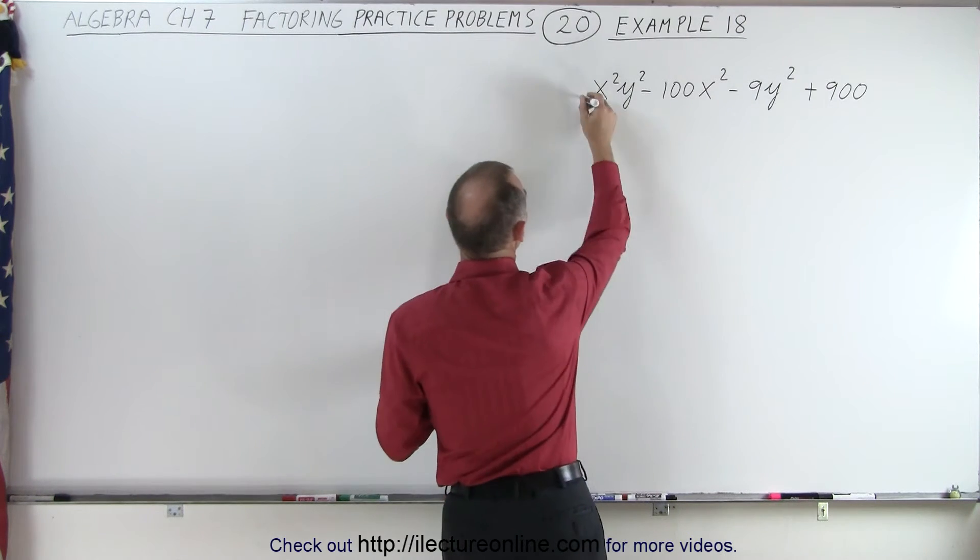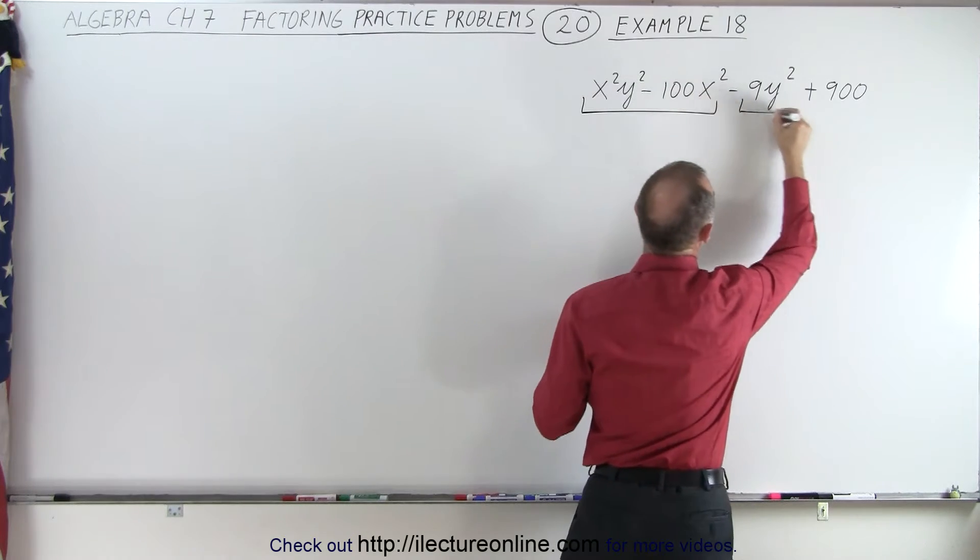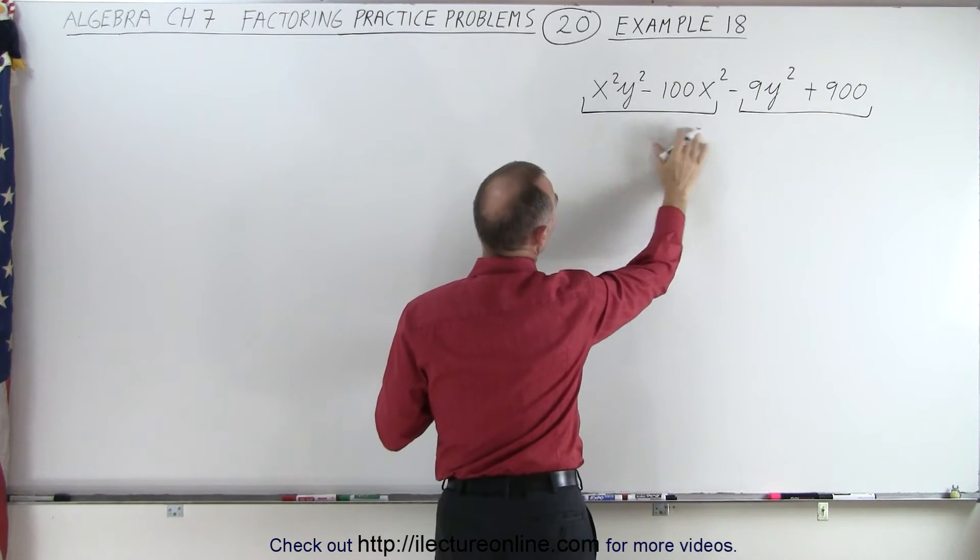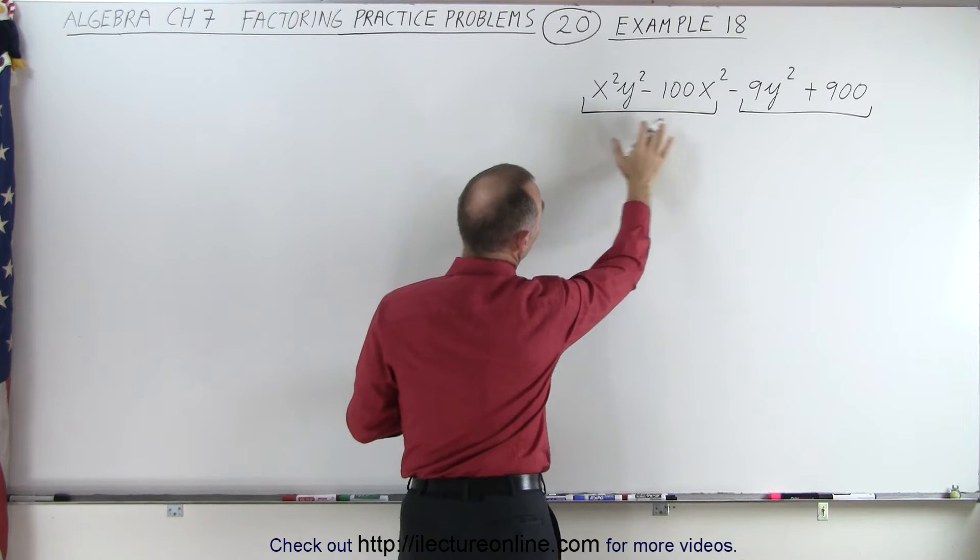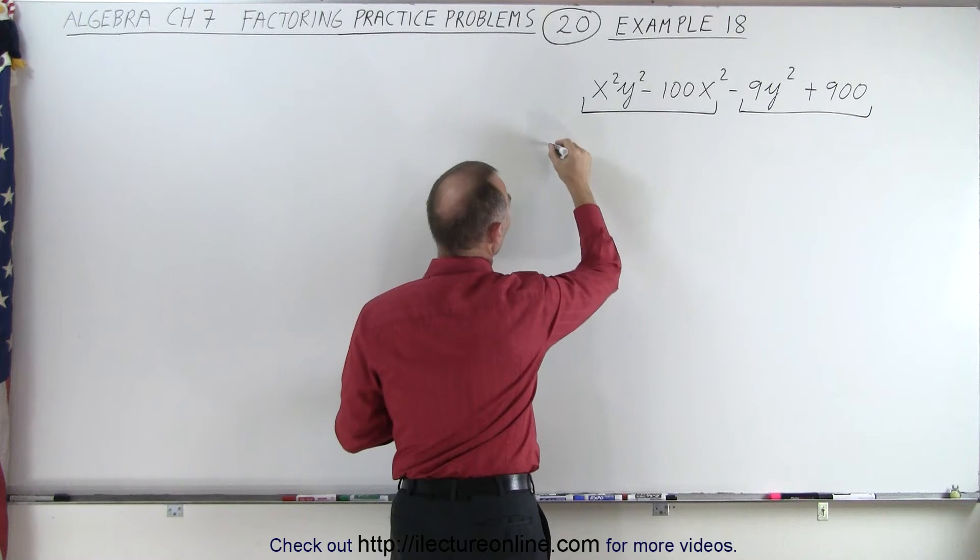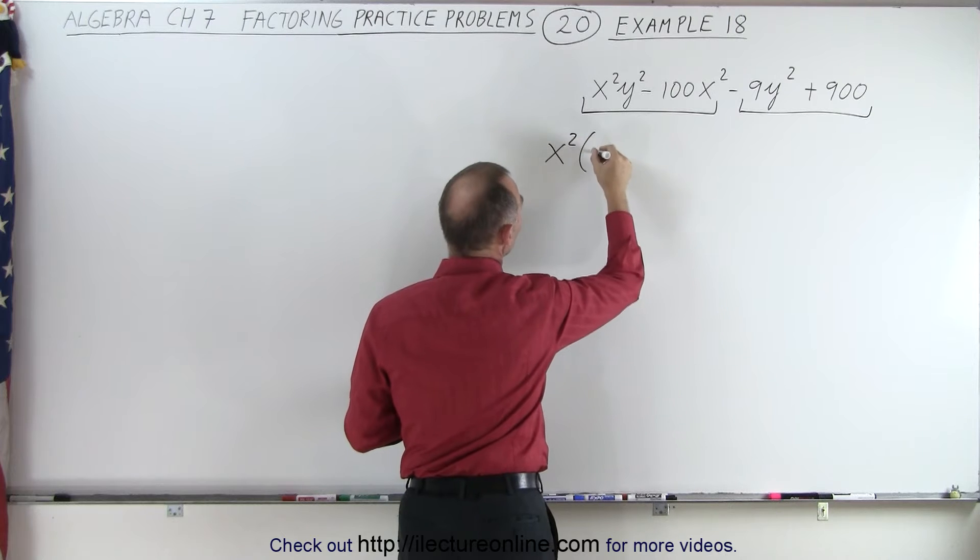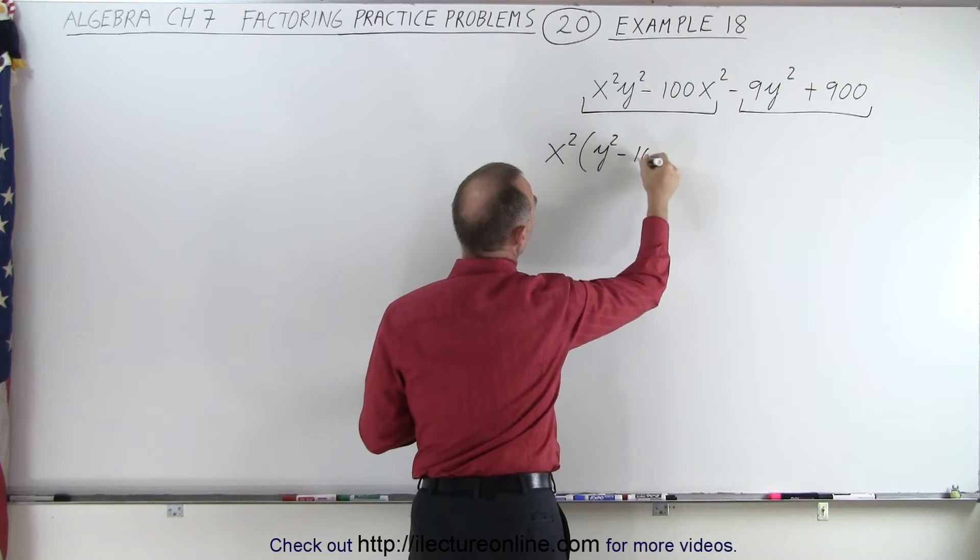All right, so we're going to group the first two together and the next two terms together and see what is common between these two. Well, it turns out you can factor out an x squared because that exists in both terms. So then we have x squared times y squared minus 100.